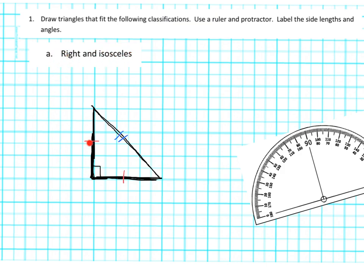I just drew a triangle that is a right triangle — there it is — and it's isosceles because here are the two matching lengths. Is this the only answer possible? No way. There's an infinite number of answers that could have worked. In general, they're all going to have a right angle, two sides that match, and an oddball side.